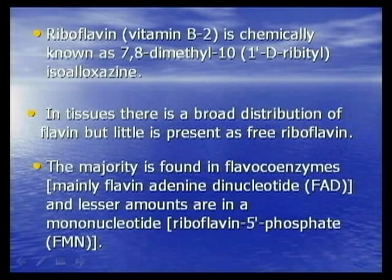Lesser amounts are found as flavin mononucleotide, FMN, also known as riboflavin-5-phosphate.